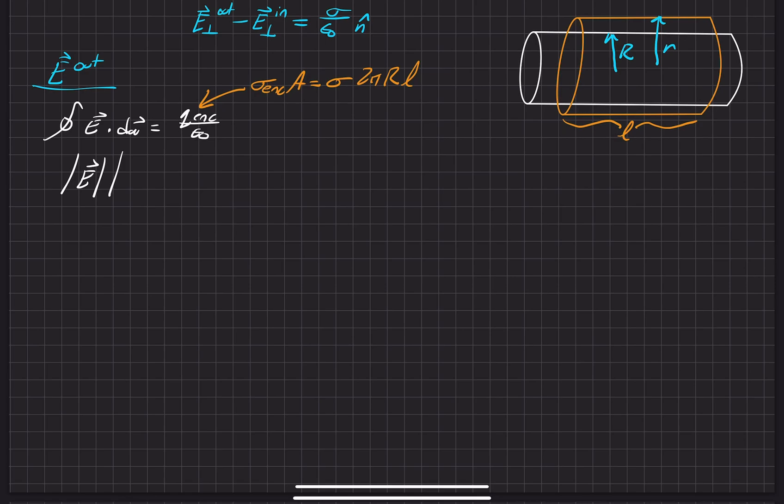where we're free to change the value of little r as we want. We can make this Gaussian surface as big as we want, as long as it's on the outside of the electric, of the surface charge density. So this is 2 pi R times L, and L can be infinitely long if you want. But as you'll see in a second, as we make this substitution right here, is that that'll end up be not a factor.